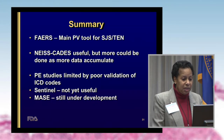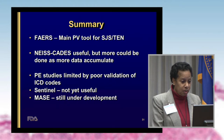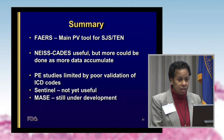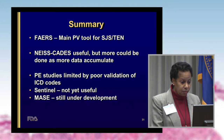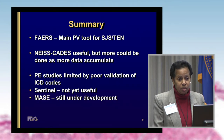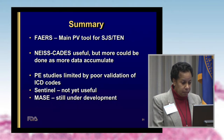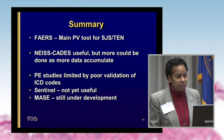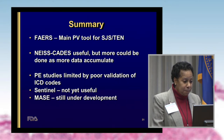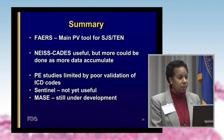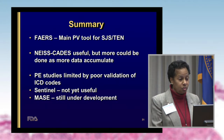In summary, FAERS is the main pharmacovigilance tool we use at FDA, but it is limited by missing data and underreporting. NEISS-CADES is useful, but more could be done, especially with confirming the diagnosis. Pharmacoepidemiology studies are severely limited because we lack a useful algorithm for detecting the diagnosis and ICD-9 codes do not validate well. MACE — Molecular Analysis of Side Effects — is a research tool at FDA that I haven't had time to discuss today, but details are in your handouts.